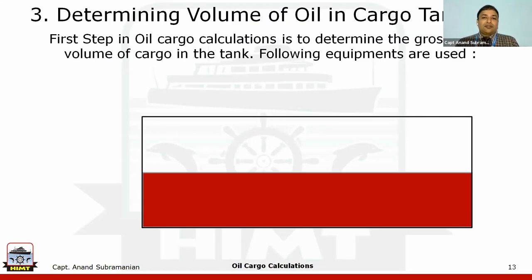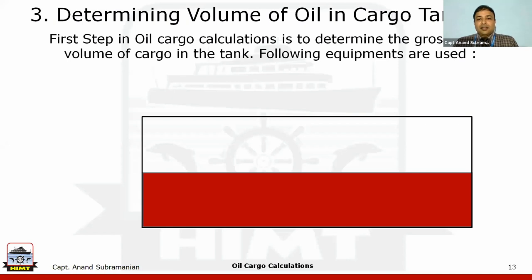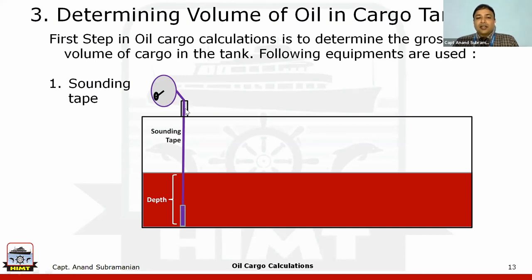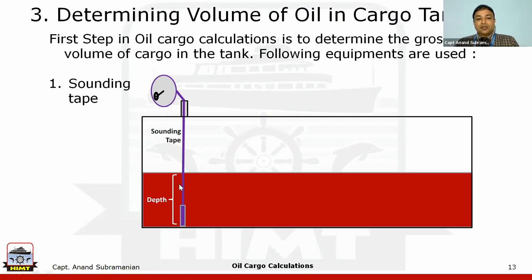Now let us come to the heart and soul of this oil tanker calculation — finding out the volume of oil in the cargo tank. The basic condition is that the tank has no list and no trim — perfectly even keel and upright. We find out the gross volume in the tank using equipment. The first one is a sounding tape. It is put into a sounding pipe and goes all the way down. An oil-finding paste is applied to the tape — this paste changes color only when it touches oil, nothing happens when it touches water or air. So we come to know the depth of the oil directly.